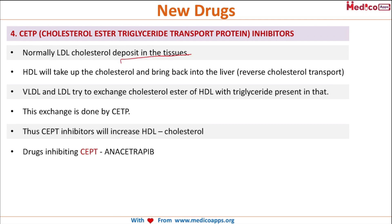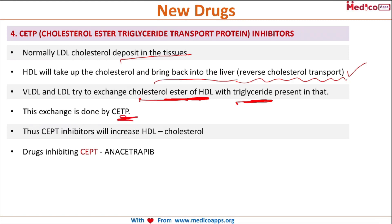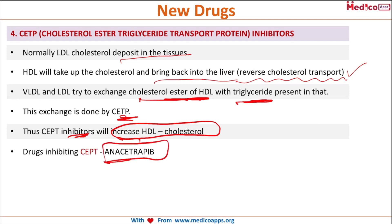The last type of drugs are CETP inhibitors — cholesteryl ester transfer protein inhibitors. Normally, HDL takes up cholesterol from tissues and brings it back to the liver via reverse cholesterol transport. VLDL and LDL exchange their cholesterol esters with HDL triglycerides via CETP. So CETP inhibitors increase HDL cholesterol and reduce VLDL and LDL cholesterol. The drug in this class is anacetrapib. That concludes the anti-dyslipidemic drugs.